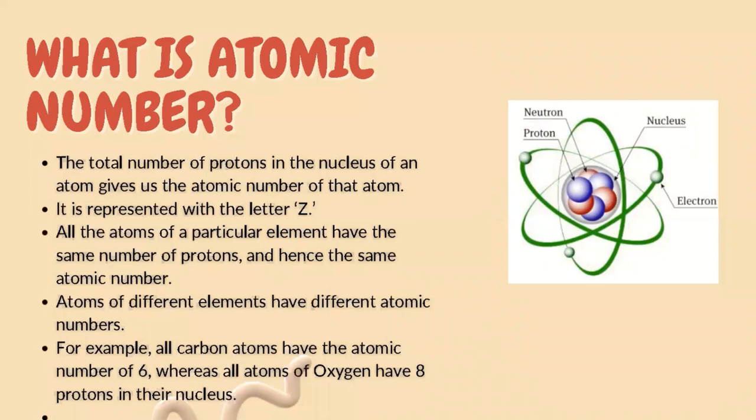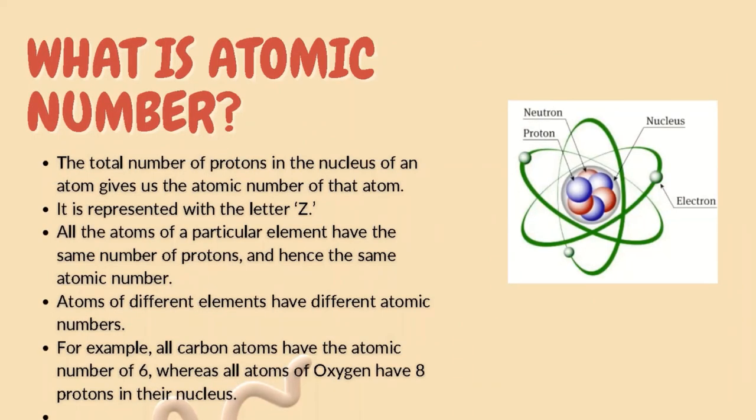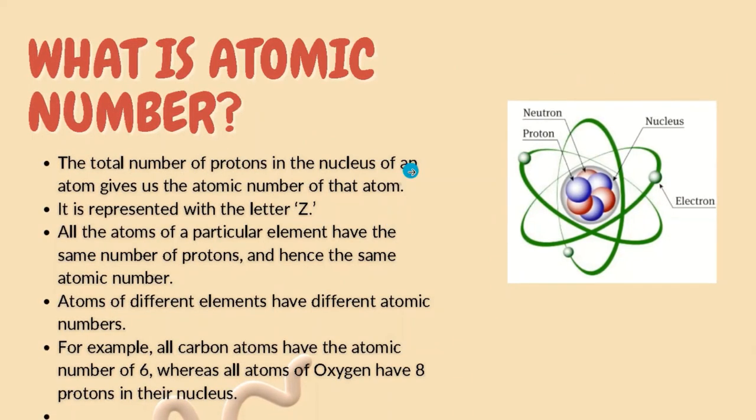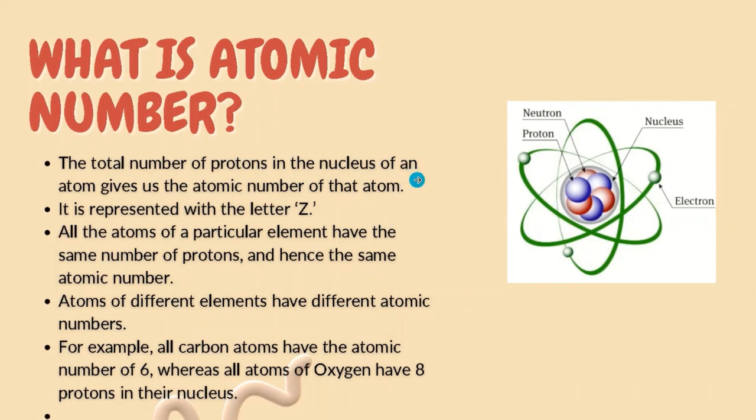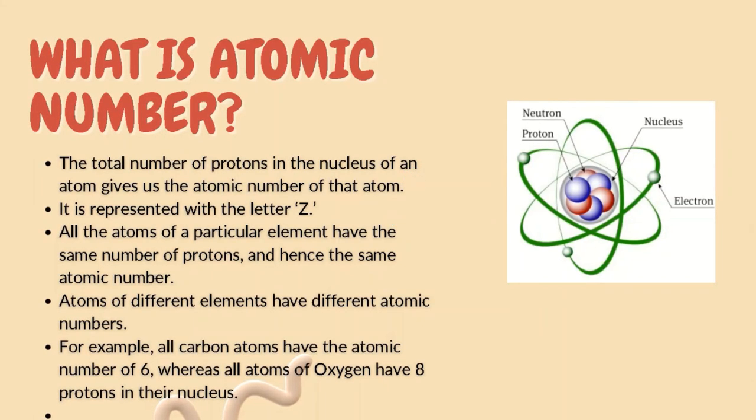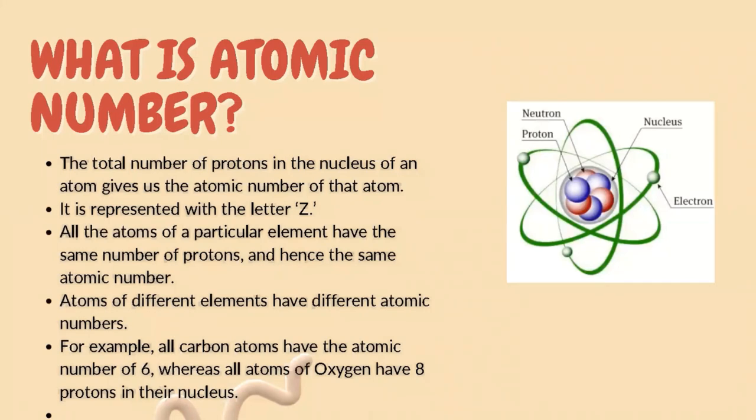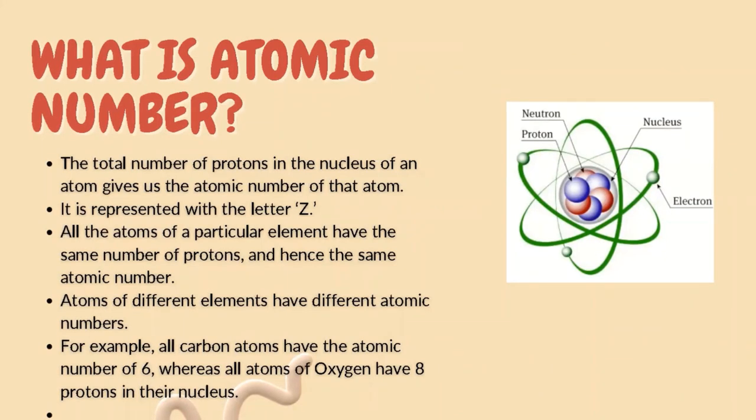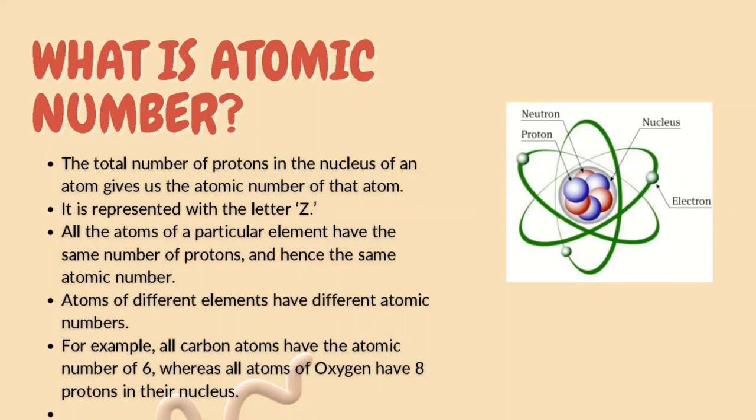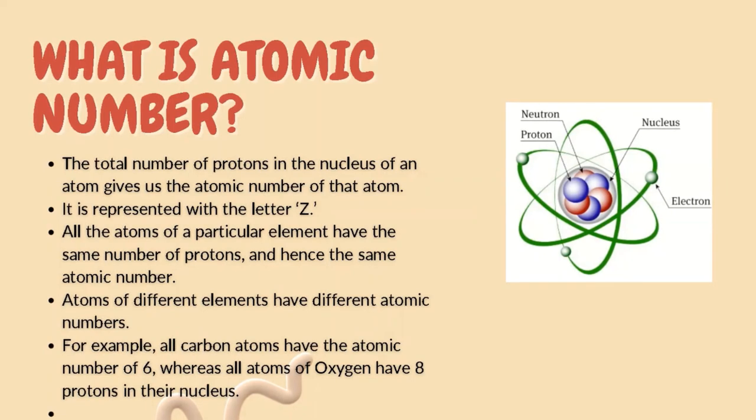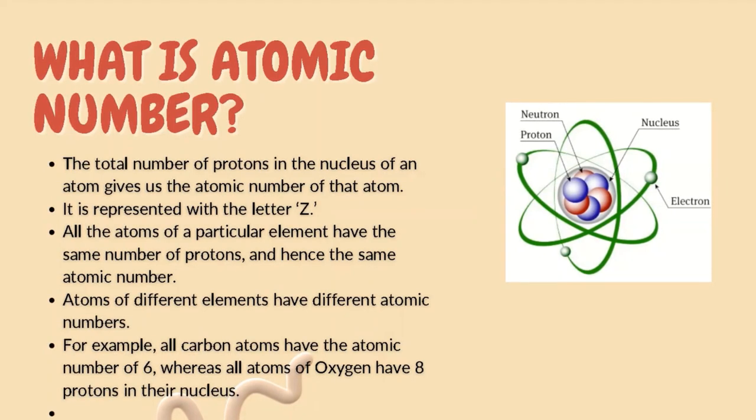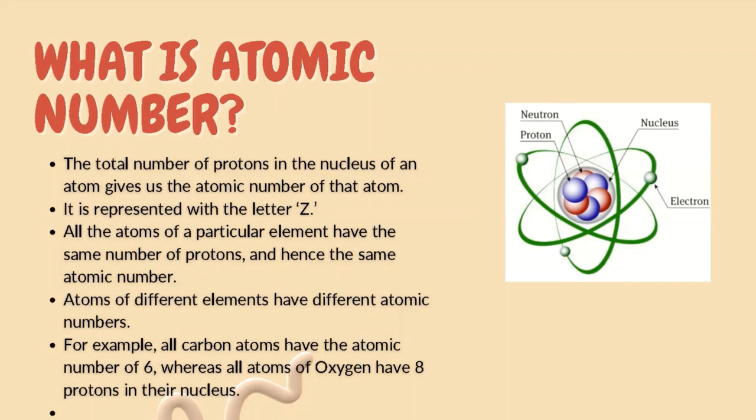What is atomic number? How we can define? The total number of protons in the nucleus of atom gives us the atomic number of that atom. It is represented with the letter Z. All the atoms of a particular element have the same number of protons and hence the same atomic number.